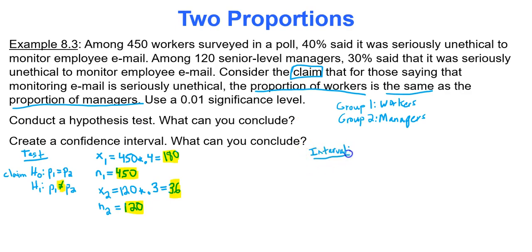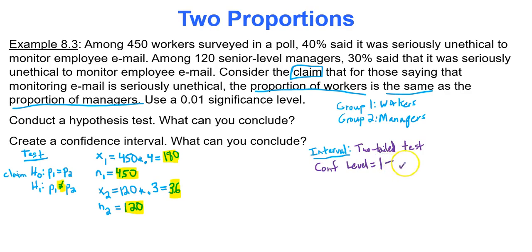For the confidence interval, this is a two-tailed test because the alternative hypothesis uses 'not equal to.' Therefore the confidence level is one minus the significance level: 1 − 0.01 = 0.99. That's the additional value to type into Google Sheets.